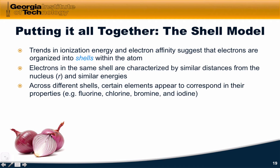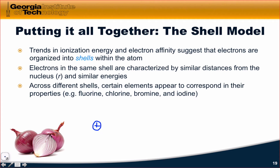Across different shells, certain elements appear to correspond in their properties. A good example is the halogens — fluorine, chlorine, bromine, and iodine. If we focus just on the outermost shell for all of these elements, the outermost shell appears to have seven electrons, since the jump in ionization energy happens at the seventh ionization energy for all of the halogens. All of the halogens are characterized by this kind of electronic shell structure.